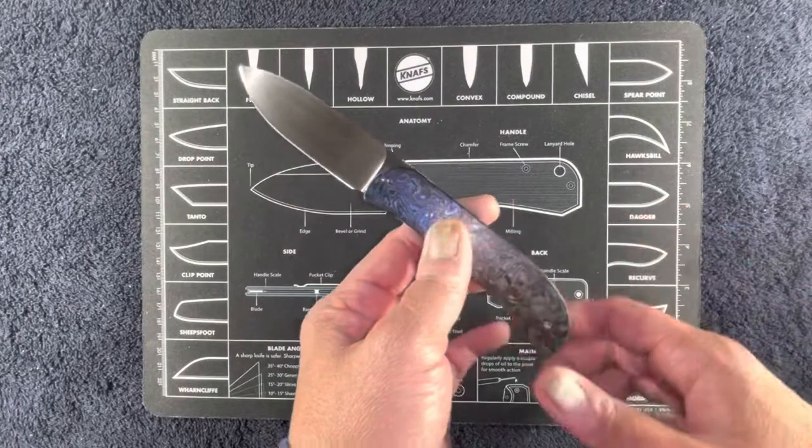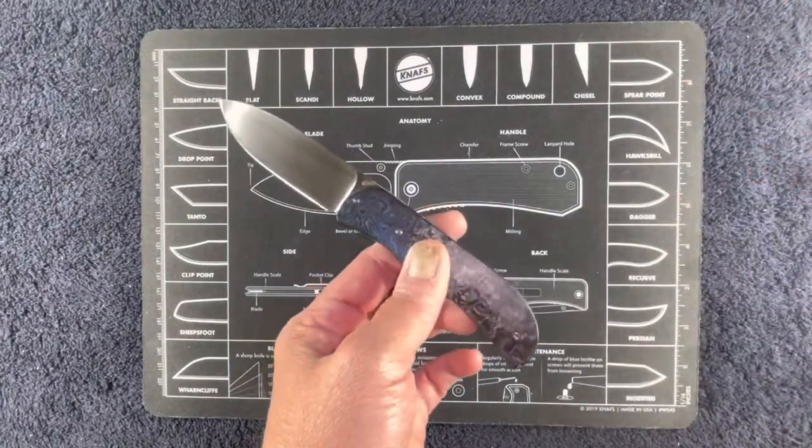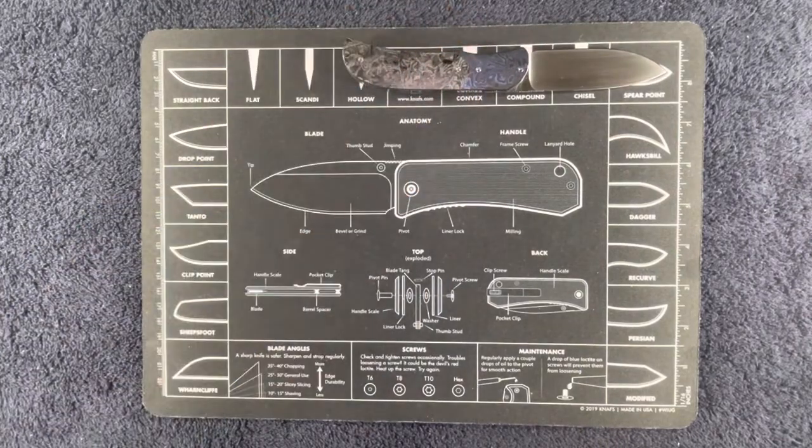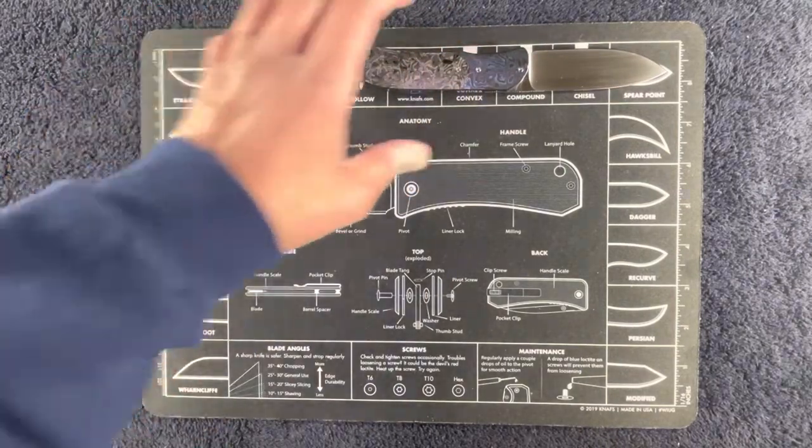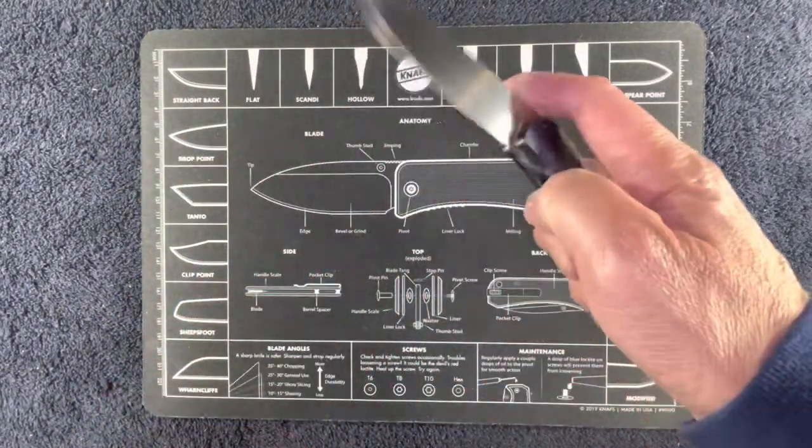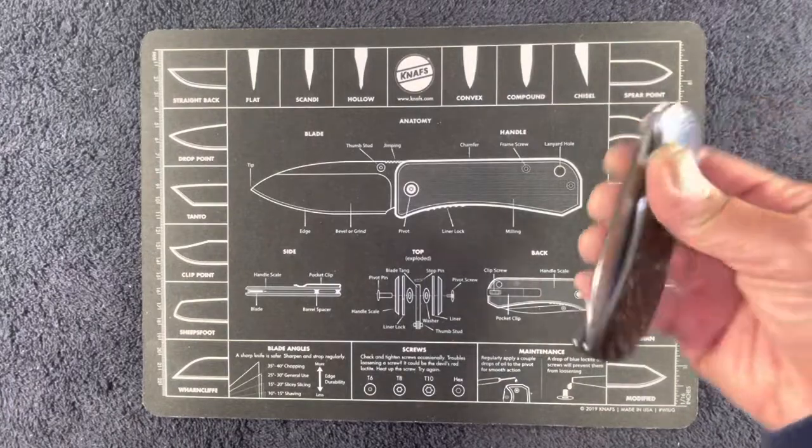And the blade shape - since I already have my little NAPS mat out - what we've got here is a spear point. You guys can see that it's a spear point blade. Yeah, this is really really amazing piece. This is a front flipper knife.